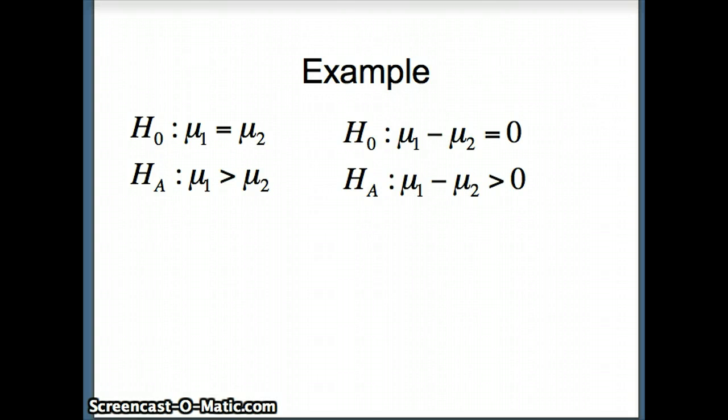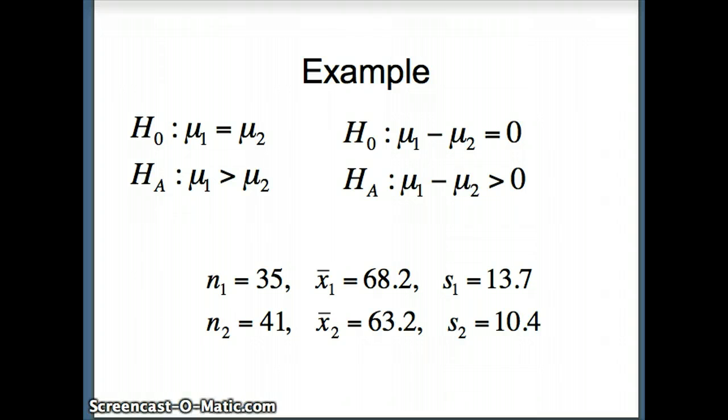So we're going to need to have some data. So here are some numbers that we have. We have to assume that these are simple random samples. Since both of these numbers are large, we're less concerned about normality. And we're going to go ahead and crunch the numbers. So we're going to need to find our test statistic, and we're going to need to find our degrees of freedom.